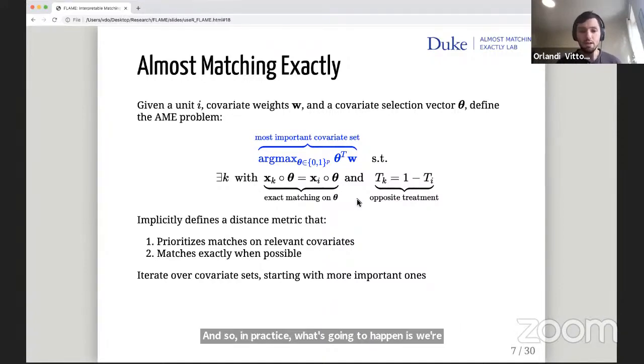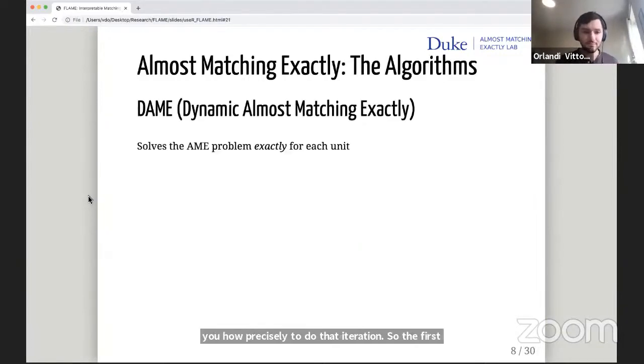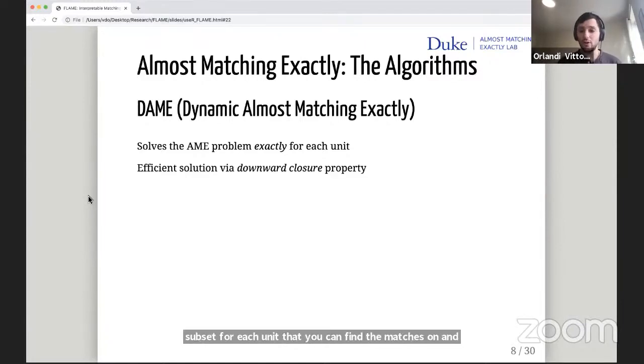So in practice, we're going to iterate over covariate sets, over these thetas, starting with more important ones. We're going to take a theta, match any possible units exactly on those covariates, choose another one, match any remaining units exactly, and iterate until stopping. Our algorithms are just telling you how precisely to do that iteration. The first algorithm is called Dame. It solves the AME problem exactly for each unit. So it will give you the highest quality covariate subset for each unit that you can find matches on. And even though there's 2 to the P possible covariate subsets, there's an efficient solution via a property called downward closure. You're going to start with the best possible covariate vector, which is a theta of all ones, denoting exact matching. Then you're going to go to the next most important covariate vector, and then the next. As soon as you find a match for some unit, it's guaranteed to be the best possible match.